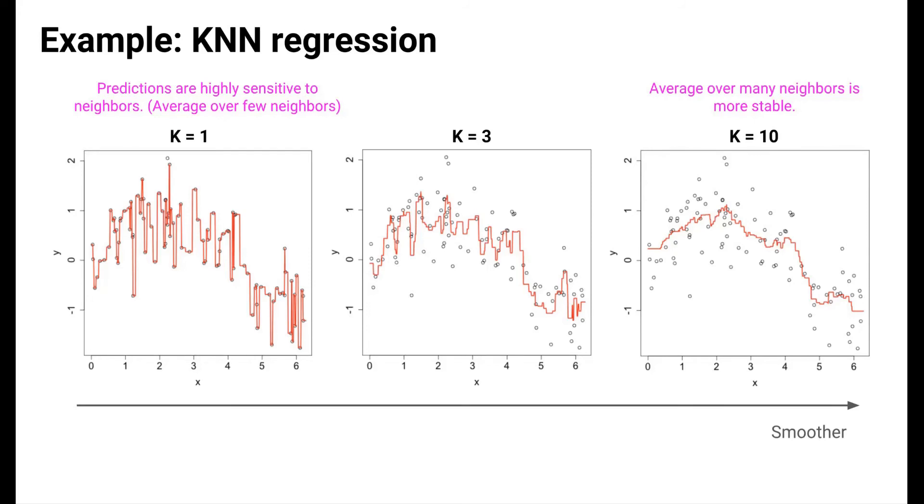When k is small, a prediction for a given x is highly sensitive to who its neighbor happens to be. That is, a prediction at a particular x value is highly variable because it depends heavily on the very particular case that happens to be closest.